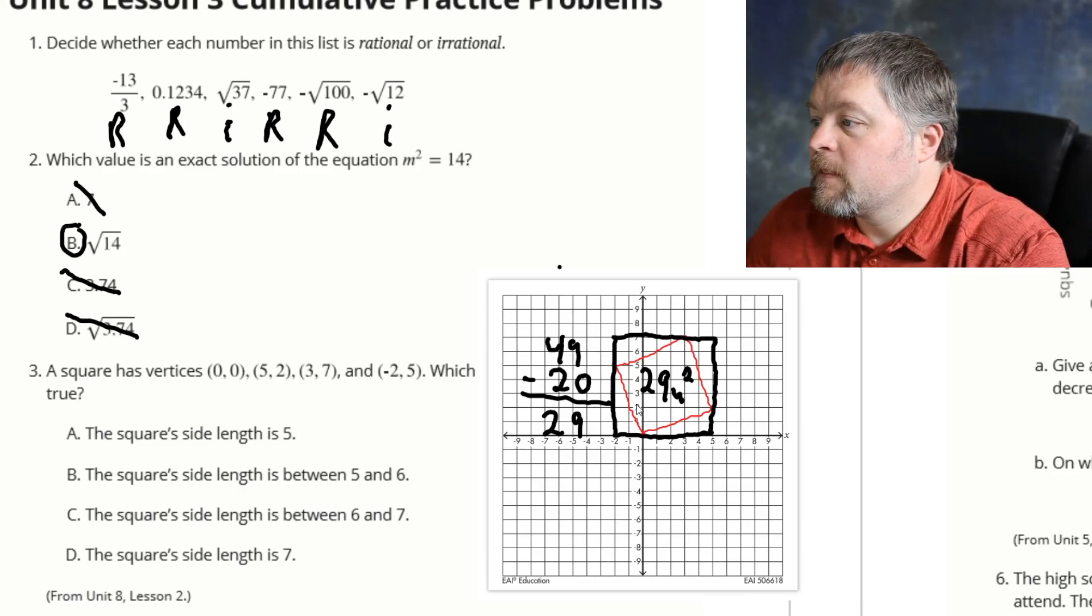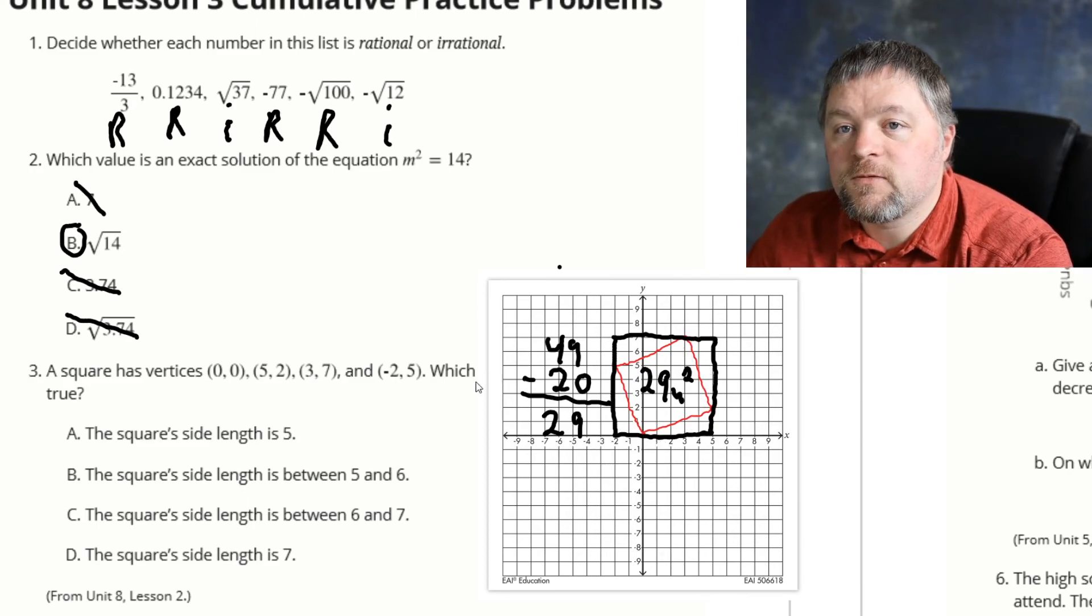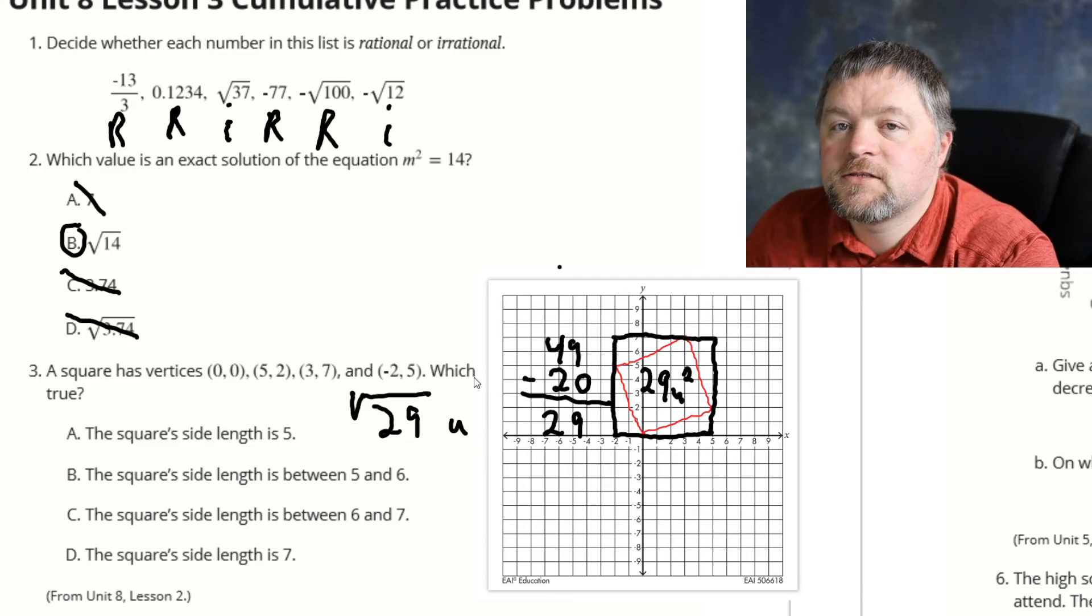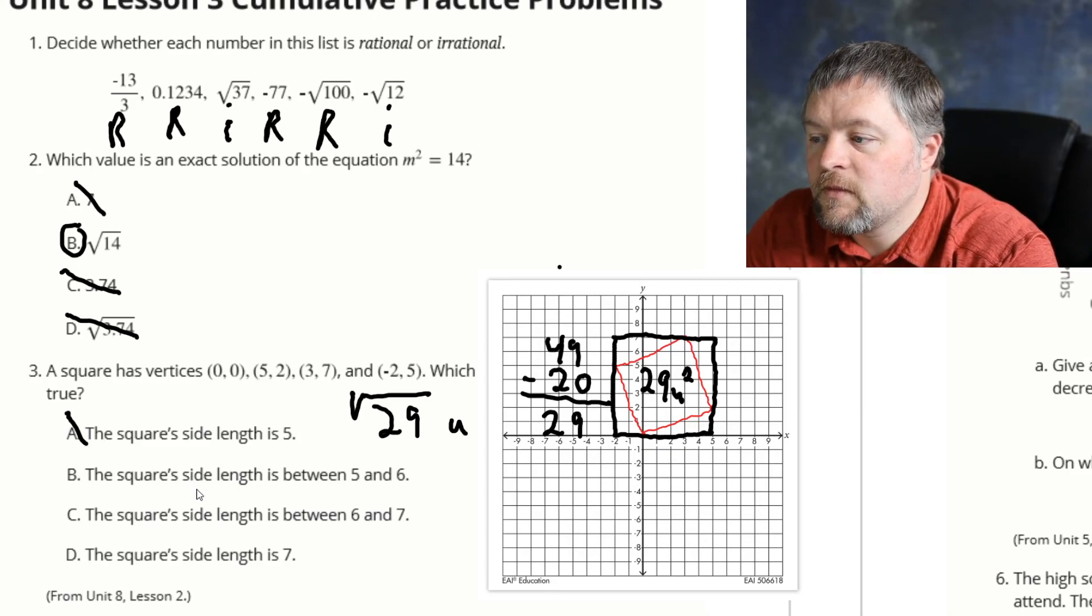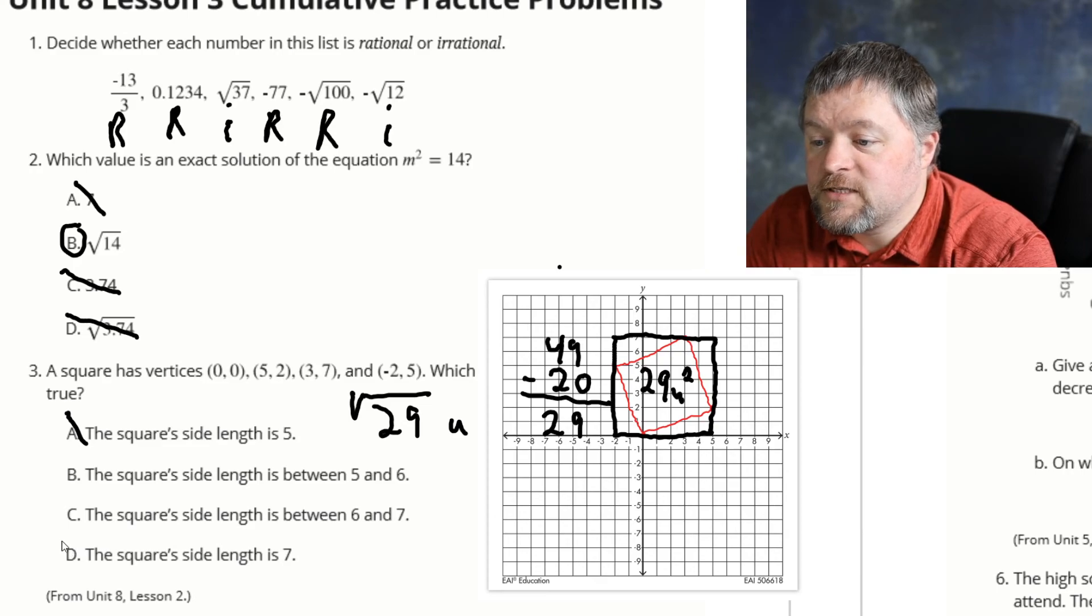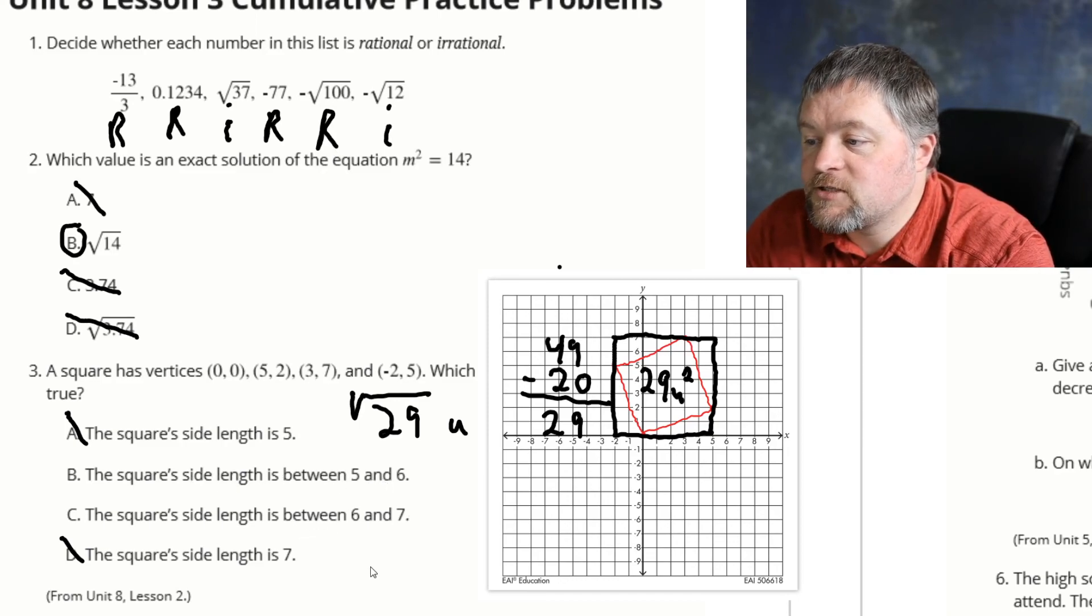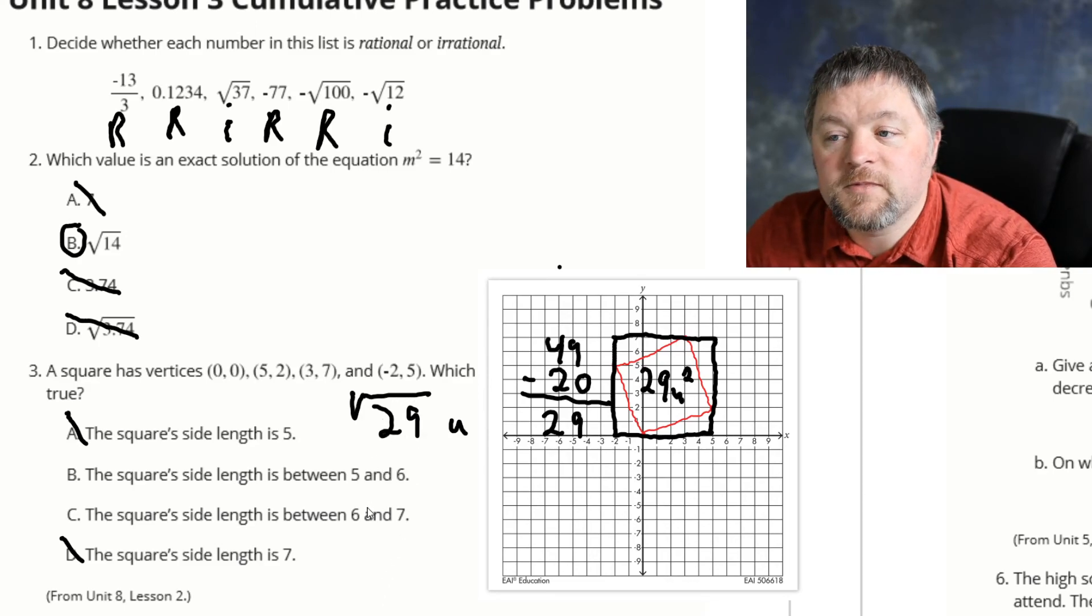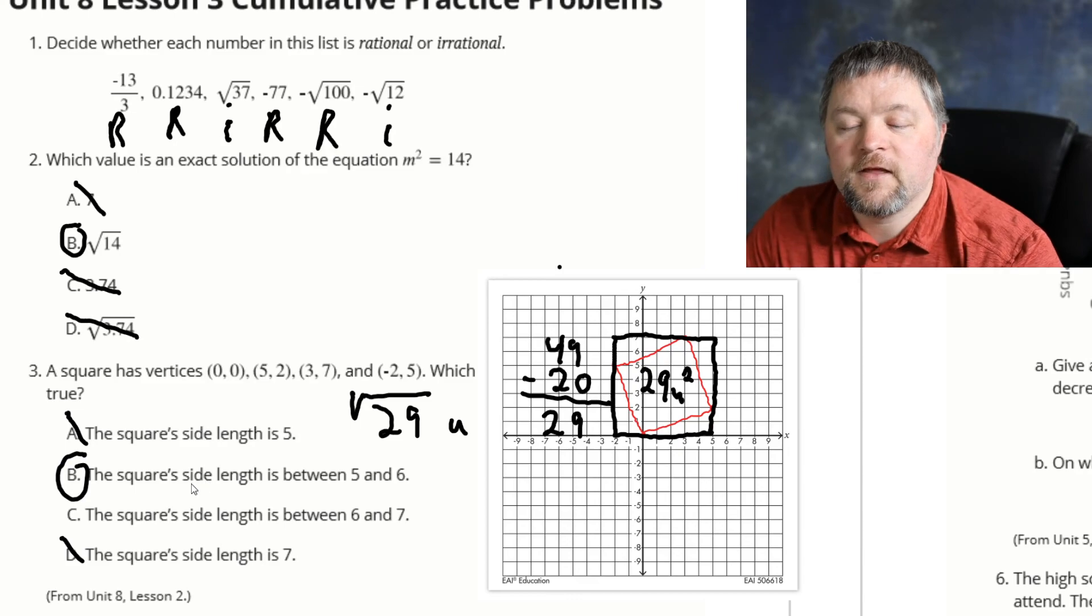Well, the side length of a square with an area of 29 square units has to be the square root of 29 units. So is the square root of 29 equal to 5? No. Is it equal to 7? No. We know it's going to have to be one of these that's either in between 5 and 6 or in between 6 and 7. Well, the square root of 25 is 5, and the square root of 36 is 6. 29 falls in between those, which means the square root of 29 has to be in between 5 and 6.